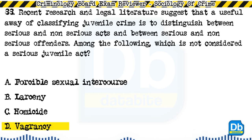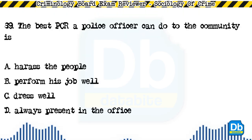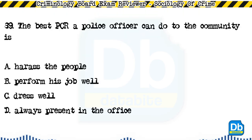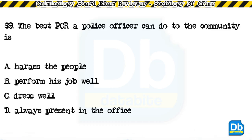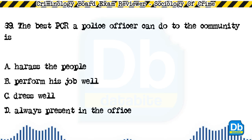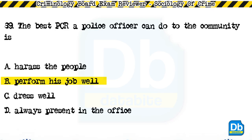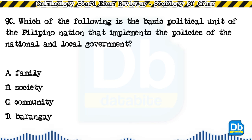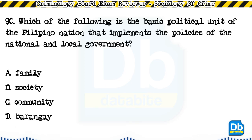Question 89: The best PCR a police officer can do for the community is: a) harass the people, b) perform his job well, c) dress well, d) always be present in the office. The answer is B, perform his job well. Question 90: Which of the following is the basic political unit of the Filipino nation that implements the policies of the national and local government? a) family, b) society, c) community, d) barangay. The answer is A, family.